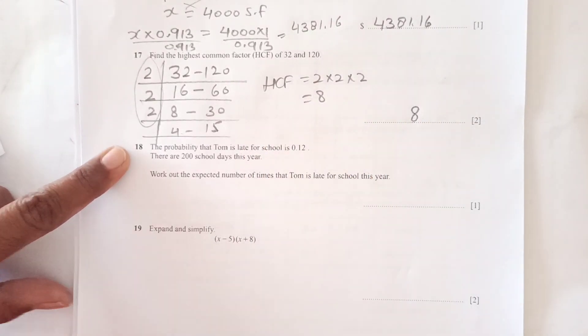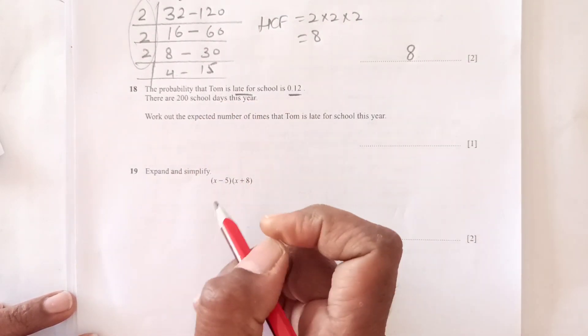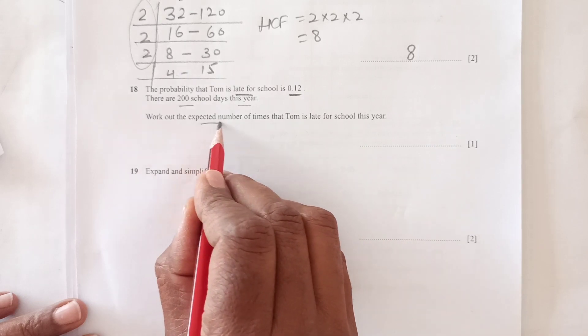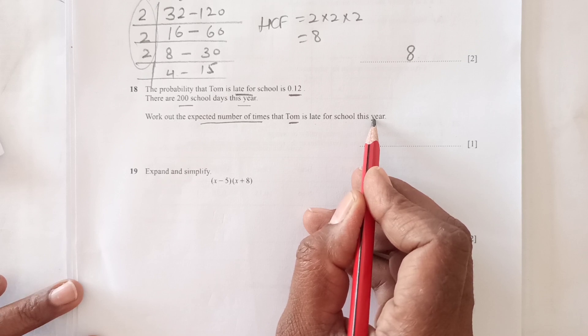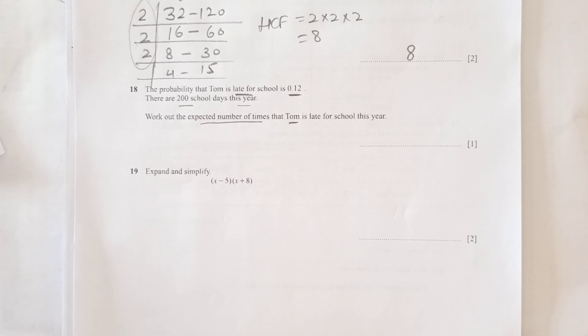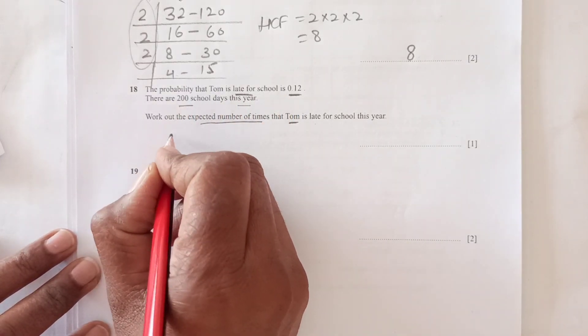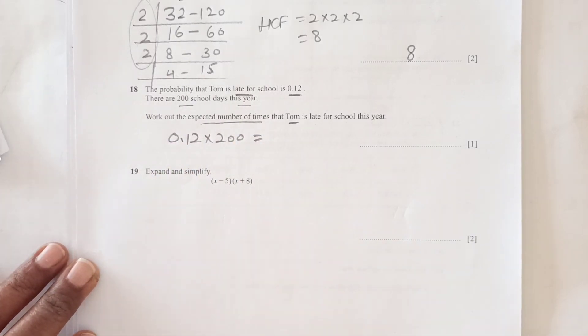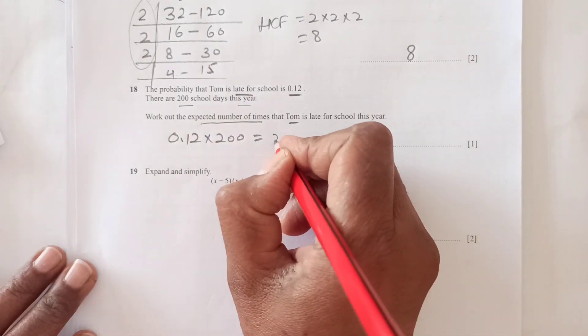Number 18: The probability that Tom is late for school is 0.12. There are 200 school days this year. Work out the expected number of times Tom is late. We multiply 0.12 by 200, which equals 24 days.